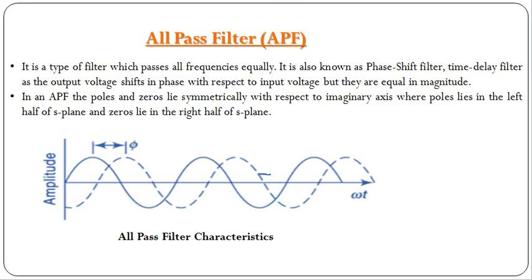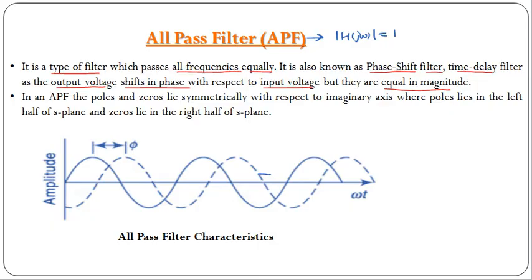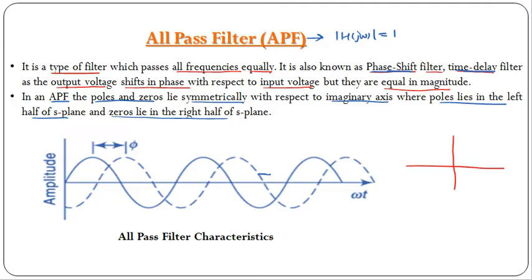The last filter is the all pass filter, which passes all frequency components equally. It is known as a phase shift filter or time delay filter because the output voltage shifts in phase with respect to the input voltage, but they are equal in magnitude. The magnitude of the transfer function is 1. For all pass filters, the poles and zeros lie symmetrically with respect to the imaginary axis: poles lie in the left half of the S-plane and zeros lie in the right half of the S-plane.